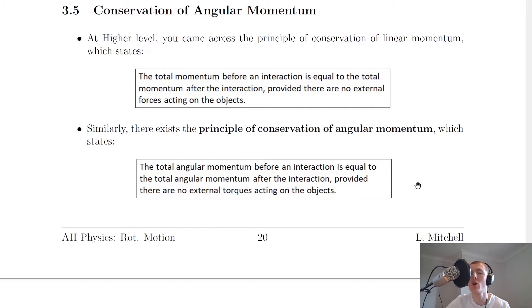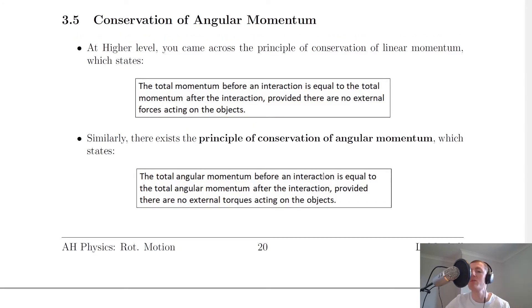Remember torque is almost like the angular form of force. Now it's probably worth reminding you about the expression from the higher physics course, which said that M1U1 plus M2U2 equals M1V1 plus M2V2. So that was the total momentum before is equal to the total momentum after. We can now do a similar thing and come up with an expression for the principle of conservation of angular momentum in terms of symbols.